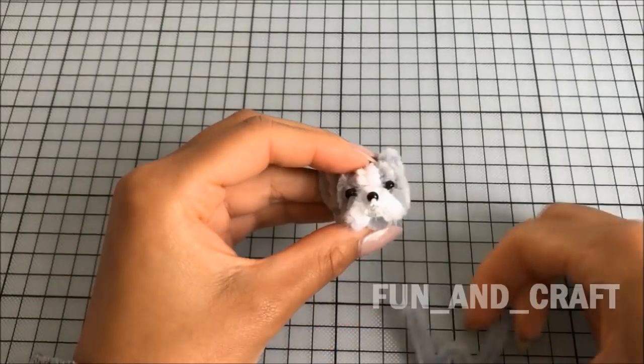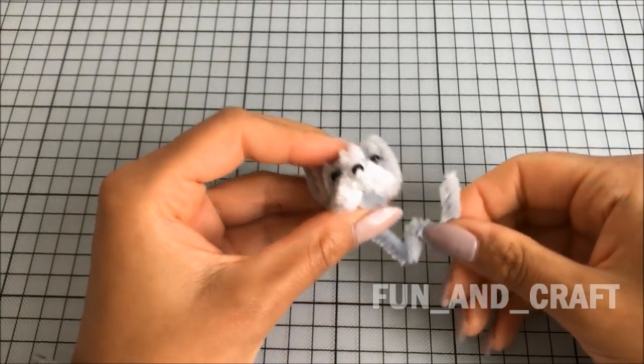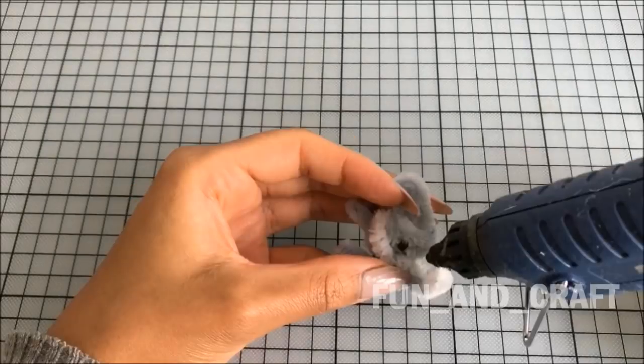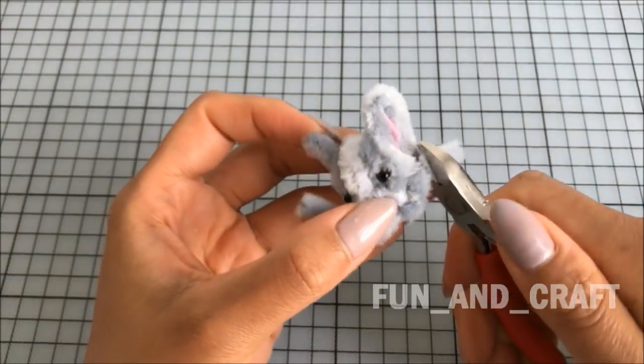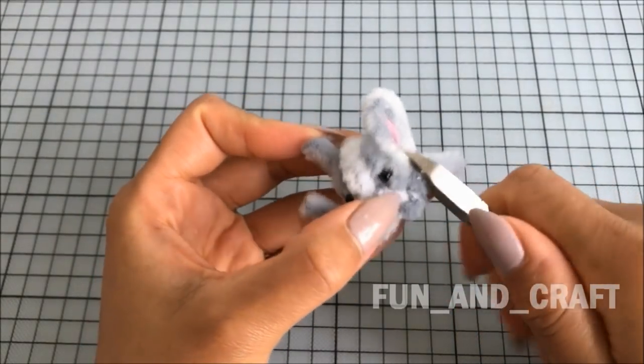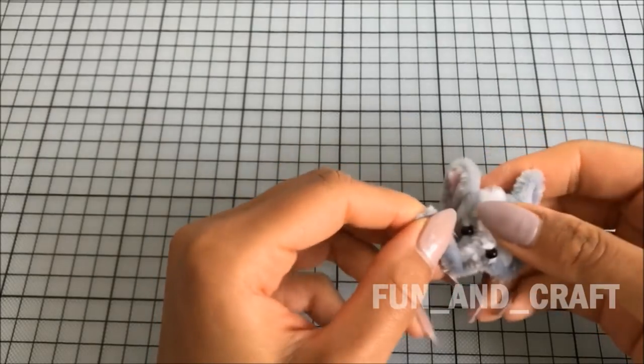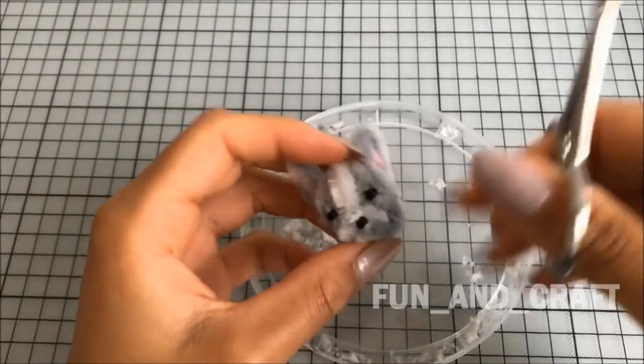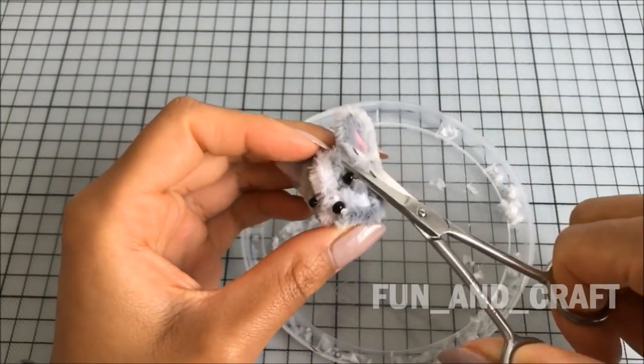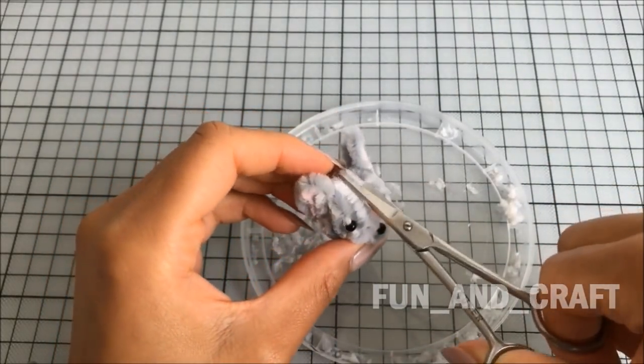I've decided to trim the fur a little bit because French bulldogs are usually not that fluffy. But don't cut off too much if you don't want the wire to show.